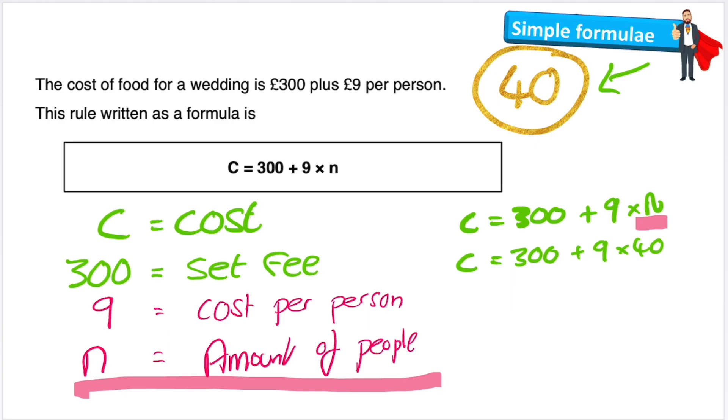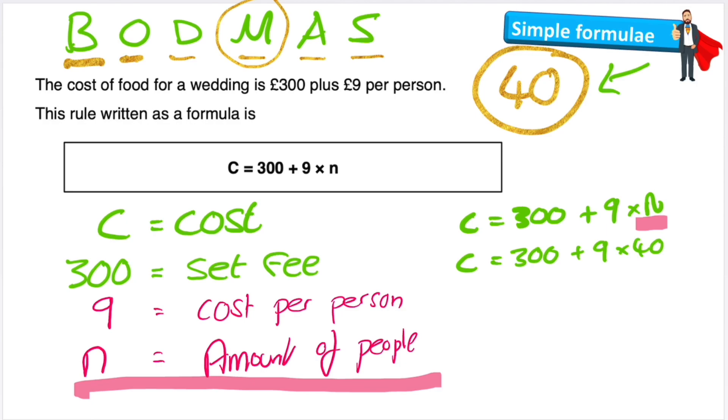And now we need to use a little bit of our BODMAS knowledge. BODMAS is a helpful reminder for what order of operations we have to do things in. We have brackets, order, division, multiplication, addition and subtraction. And what we can see here is that multiplication is before addition. So I'm going to do my multiplication first in my algebraic equation. So 9 times 40 is 360. So now I can write the next line: C equals 300 plus 360. Now I'm simply left with an addition question and I can see that C equals 660. So the cost for this wedding would be 660 pounds based on 40 people coming. But the important thing to understand for this lesson is this formula and the fact that it would work with every amount of people that could come to my wedding.